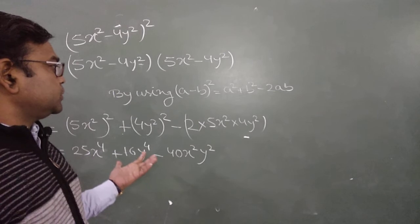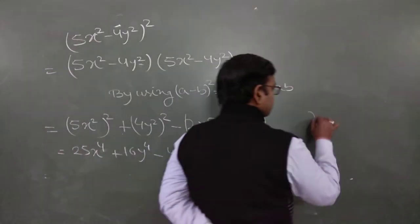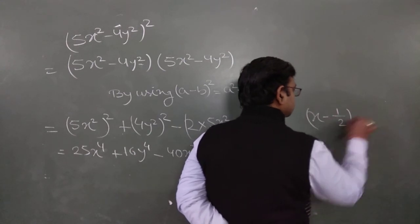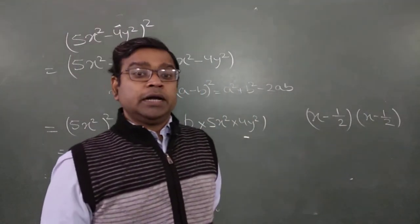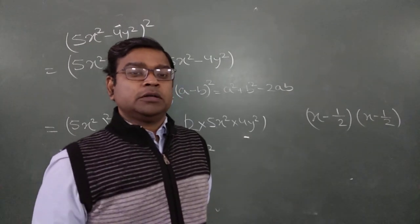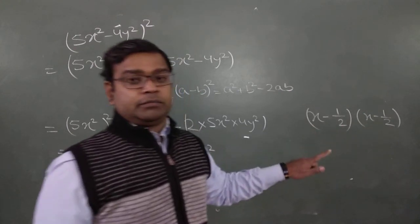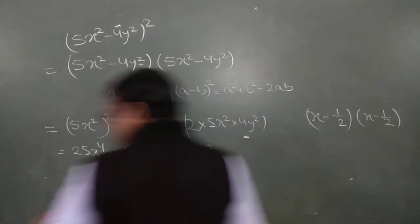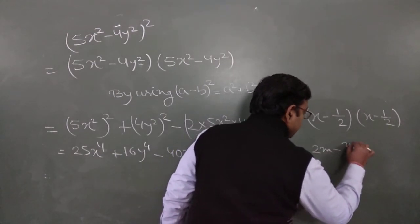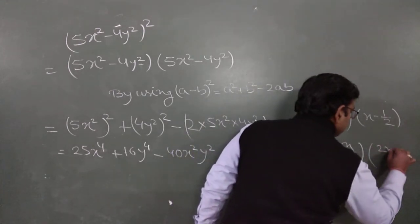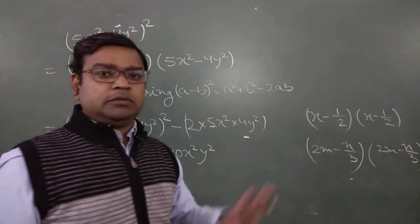My purpose is to explain the concept of first term and second term using both identities so you can easily solve questions. You can similarly solve (x - 1/2) squared or (2m - n/3) whole squared. All of you must solve these by using the identity. If your book asks 'find the product,' you may use the multiplication method too, but try to practice using the identity.